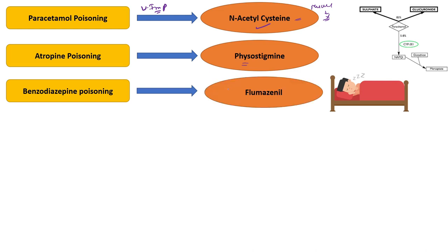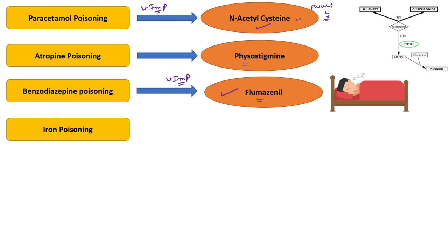For benzodiazepine poisoning, we use flumazenil. This is also a very important drug. Flumazenil is used in the treatment of benzodiazepine poisoning. MCQs related to this come frequently in competitive exams, so always remember that the drug of choice for benzodiazepine poisoning is flumazenil.